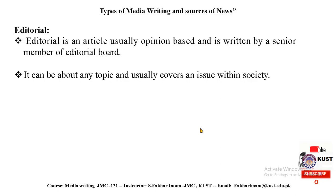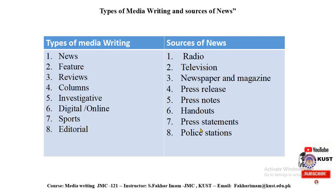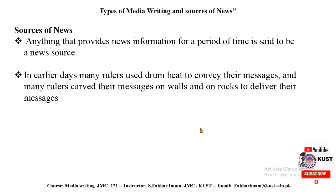Now we have the second part, which is sources of news. Anything that provides news information for a period of time is said to be a news source. There are several news sources such as official documents, governmental officials, witnesses of the crime scene, the victims themselves, etc. News sources are required for both journalists and for the audience, and we are going to discuss news sources for both.